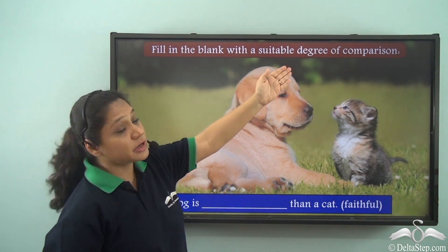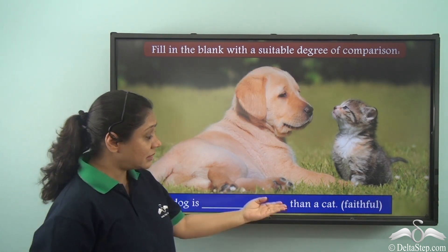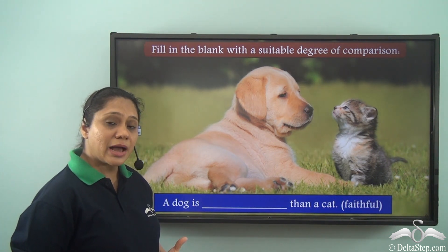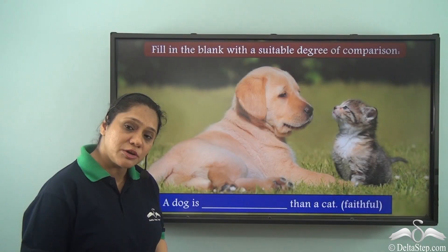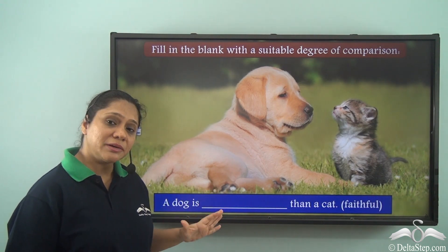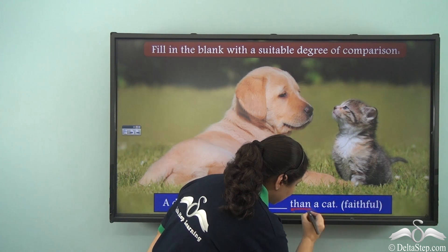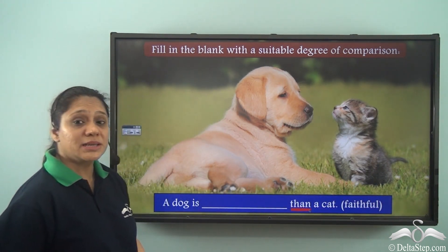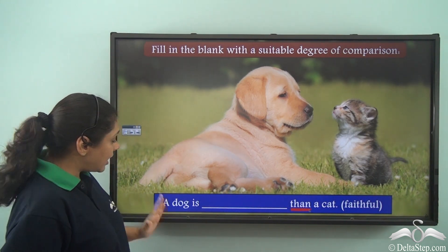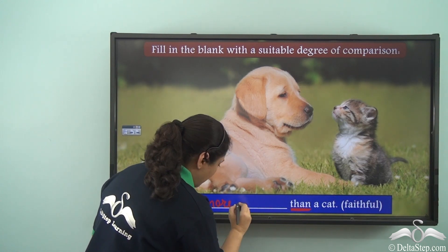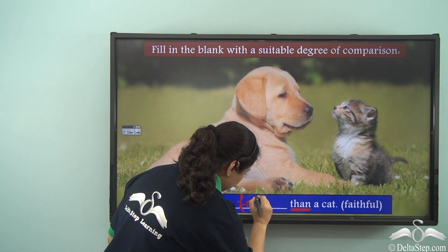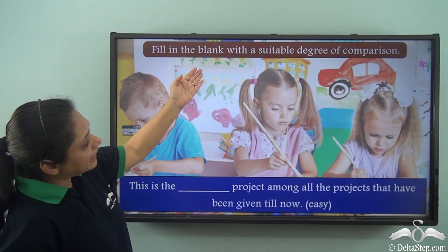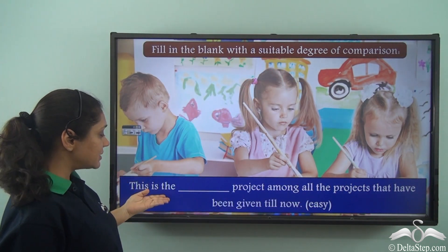Fill in the blank with the suitable degree of comparison: 'A dog is ___ than a cat.' The adjective given is 'faithful.' We are comparing two things — a dog and a cat — and we have 'than' in the sentence, so we use the comparative degree. The comparative degree of 'faithful' is 'more faithful,' so the sentence reads: 'A dog is more faithful than a cat.'